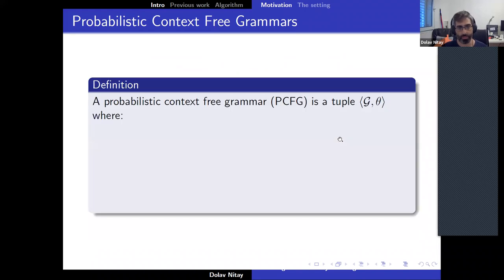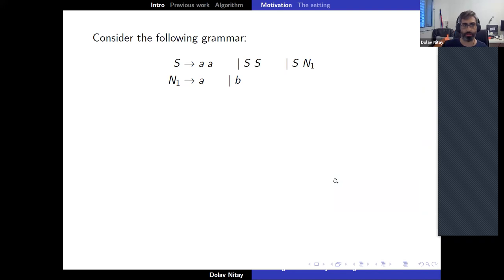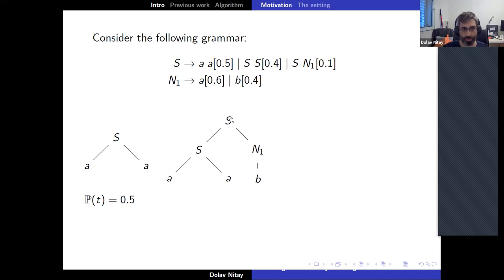A probabilistic context-free grammar is a tuple (G, θ), where G is a context-free grammar and θ assigns to each derivation rule some probability, such that for each non-terminal the probabilities sum to one. The probability of a parse tree is simply the product of the probabilities of all derivation rules used. For example, using S→SN1 with probability 0.5×0.1 and S→AA with probability 0.5, the tree probability is the product of those values.